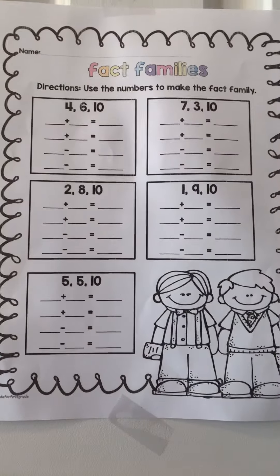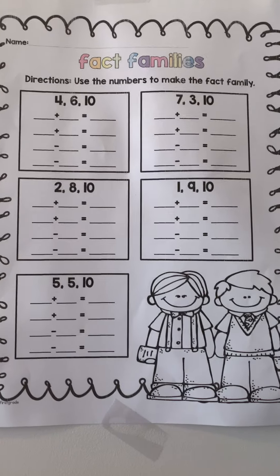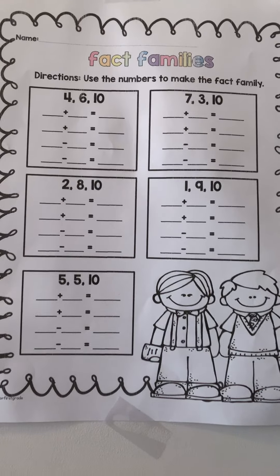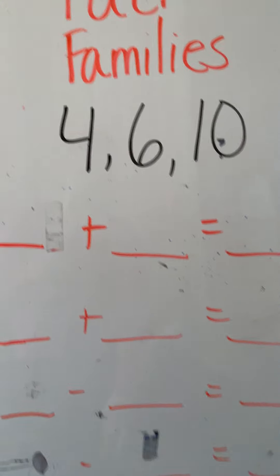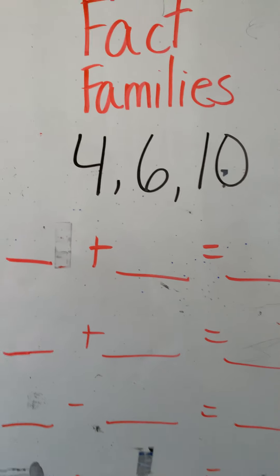So I'm going to have you guys work on today this fact family sheet as a good review. It's the one that starts at the 4, 6, 10. I'm going to do the big 4, 6, 10 on the whiteboard to start as a review, and then we'll quickly go through the other ones.